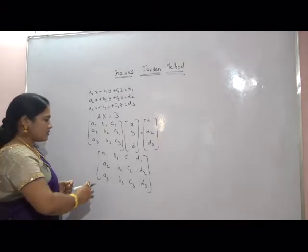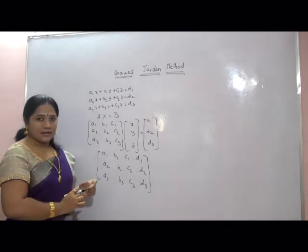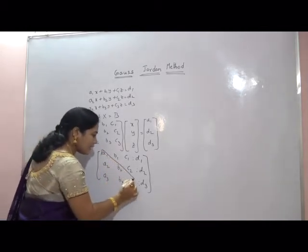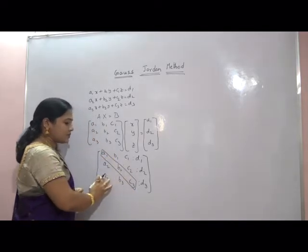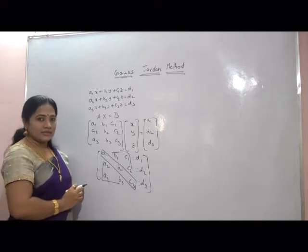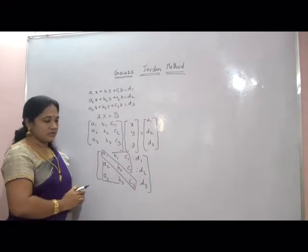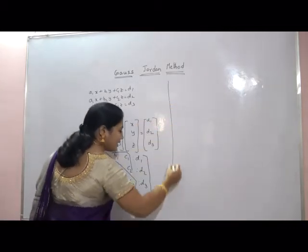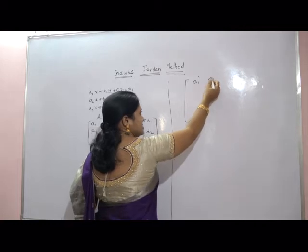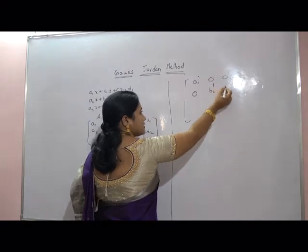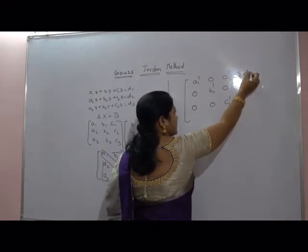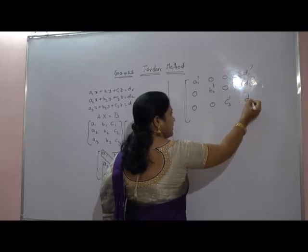Next, reduce the system into a diagonal matrix using elementary row transformations. In a diagonal matrix, except the diagonal elements, the remaining elements should be zero. After the row transformations, the resulting matrix has A1' on the diagonal with zeros elsewhere, B2' on the diagonal, and C3', with modified constants D1', D2', and D3'.